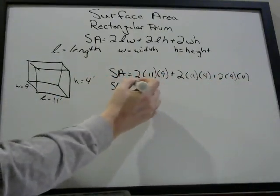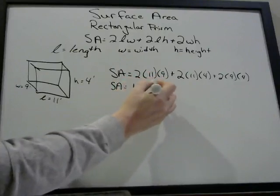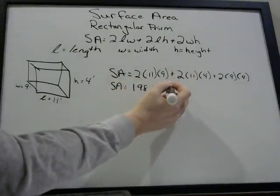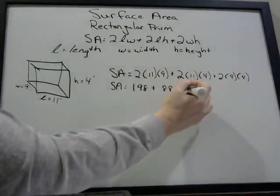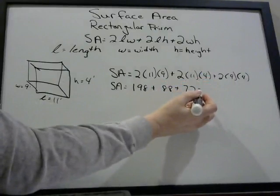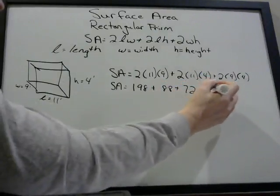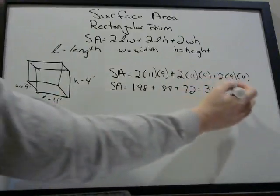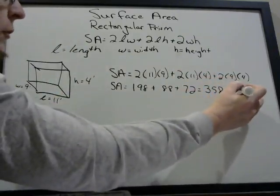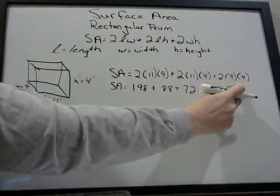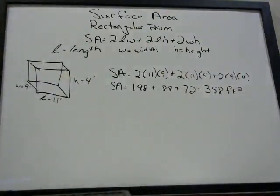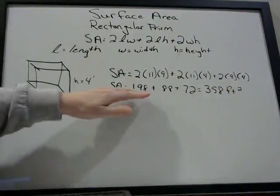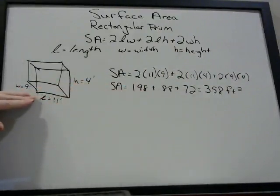So 2 times 11 times 9 is 198. 2 times 11 times 4 is 88. 2 times 9 times 4 is 72. You add all of those together and you get 358. Our units were in feet, so our answer is going to be in feet squared, or square feet. Remember, any area problem — your units are always in square units. So this would be the surface area for this rectangular prism, or this box.